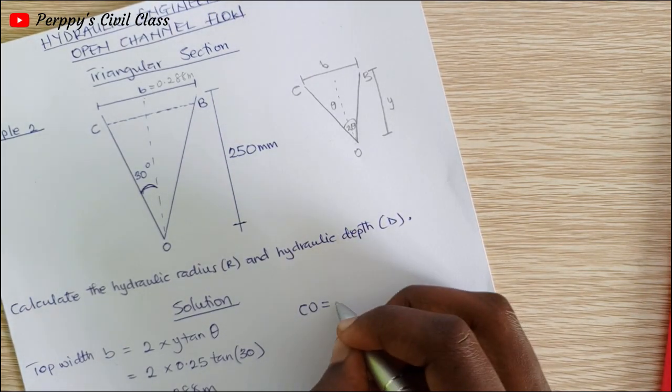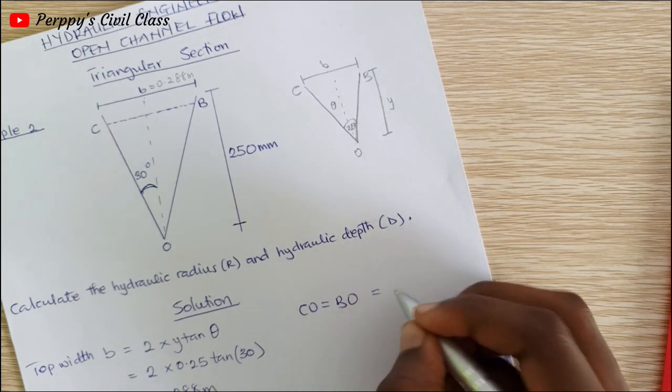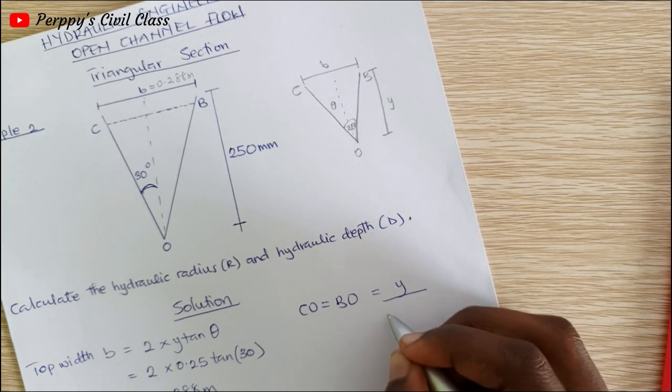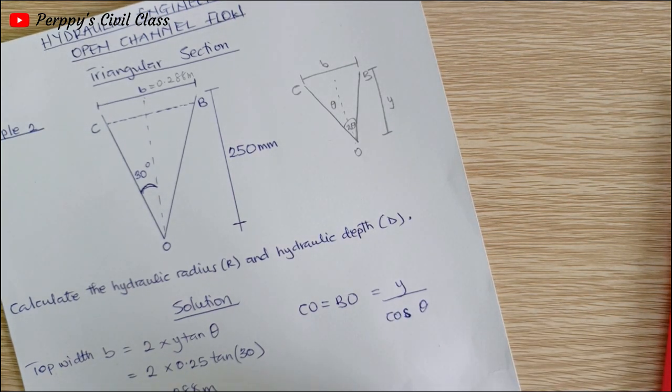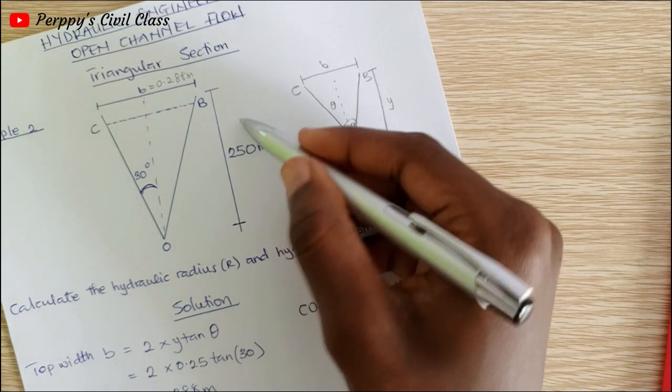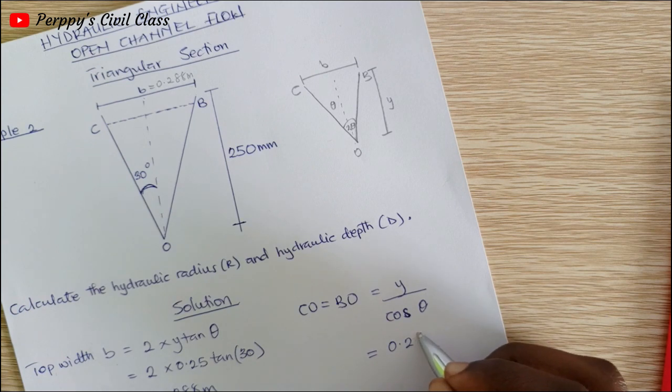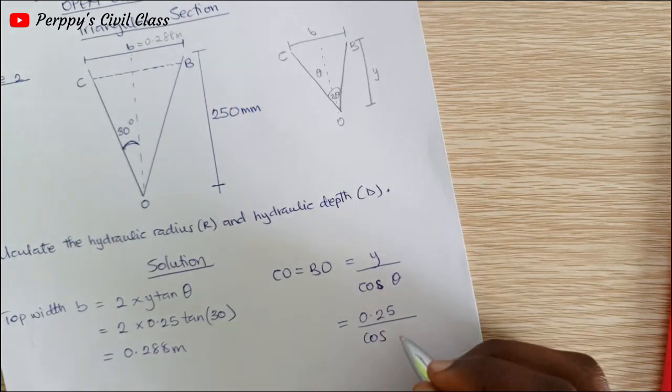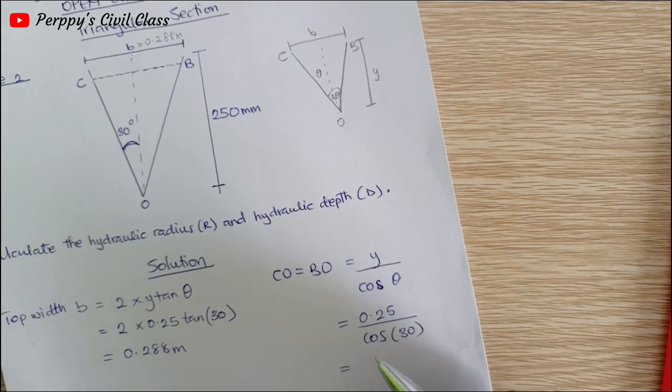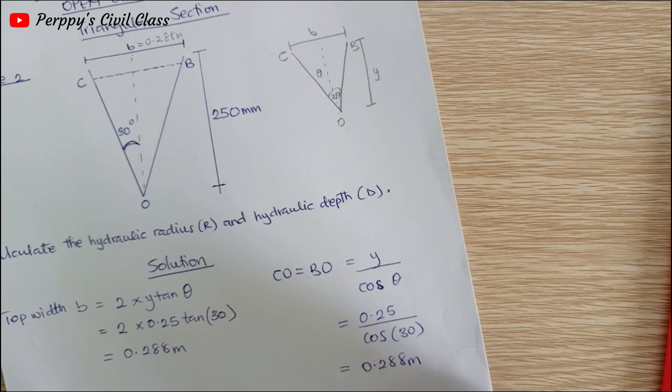CO is equal to BO and it's given as y divided by cos theta. That's 0.25 divided by cos 30 degrees, which is also going to give us 0.288 meters.